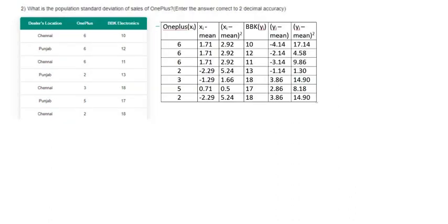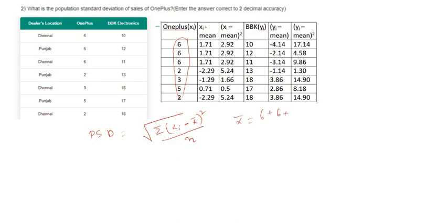In this question we have to calculate the population standard deviation of sales of OnePlus. The formula for population standard deviation is root over of summation of (xi minus x-bar) whole square by n. The mean of this data set is x-bar equals (6 + 6 + 6 + 2 + 3 + 5 + 2) divided by 7, which equals 4.29.